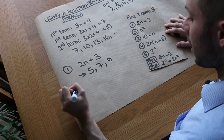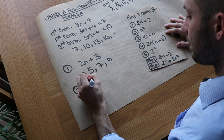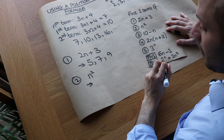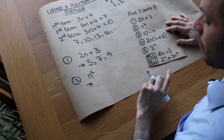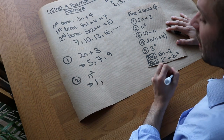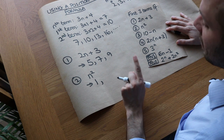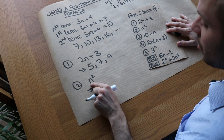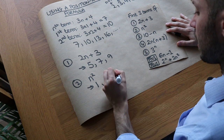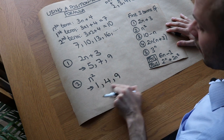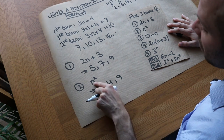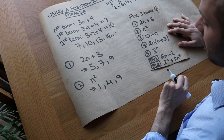Next, the nth term formula is n squared. The first term: 1 squared is 1 times 1, which is 1. The second term: 2 squared is 2 times 2, which is 4. The third term: 3 squared is 9, etc. You can see that this gives us the square numbers — so if the nth term formula is n squared, it generates the square numbers.